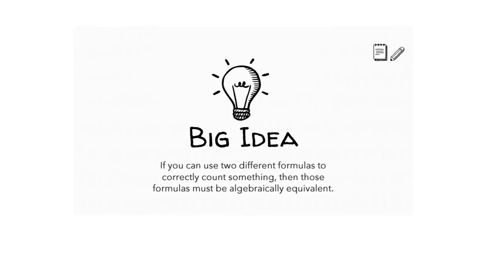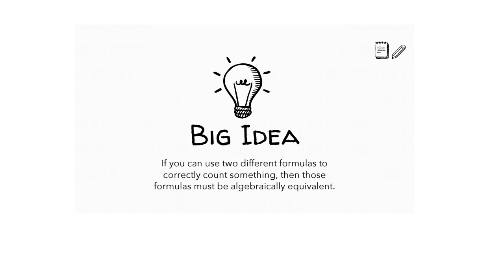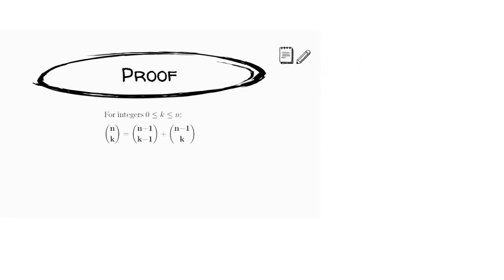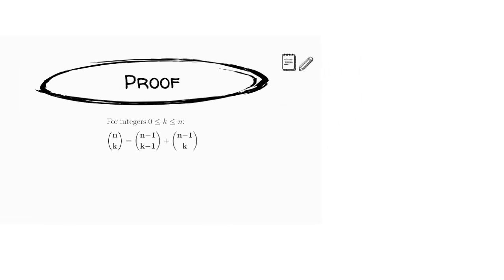Here's the big idea: if you can use two different formulas to correctly count something, then those two formulas must be algebraically equivalent. Here we'll show an algebraic proof that N choose K is equal to N minus 1 choose K minus 1, plus N minus 1 choose K. After we look at the algebraic proof, we'll double back and explain through a combinatorial proof why it makes sense that these two expressions are equal.